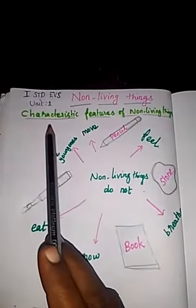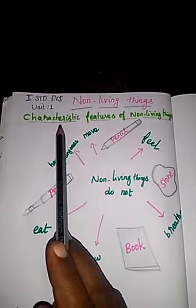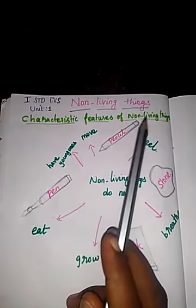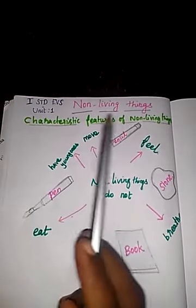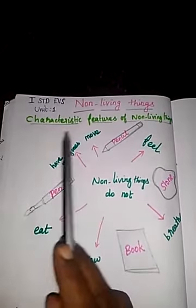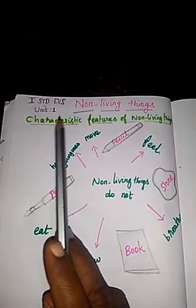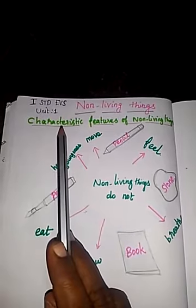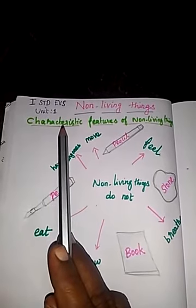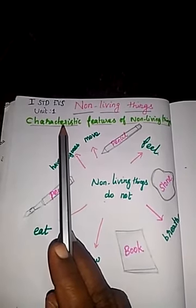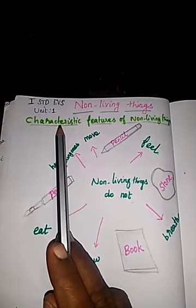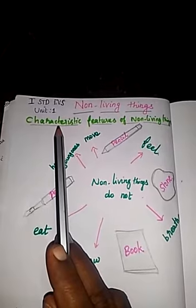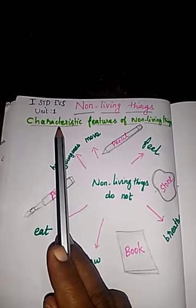Here we see the characteristic features of non-living things. What is characteristic? A special quality — a special quality of non-living things. Here we see special qualities.